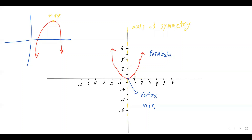For example, if x is 1, y equals 1; if x is 2, y equals 4. Symmetrically, if x is negative 1, y is also 1; if x is negative 2, y is also 4. That's why we say quadratics are symmetrical around the x-coordinate of the vertex.